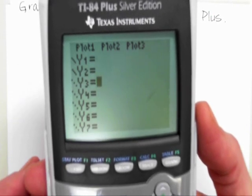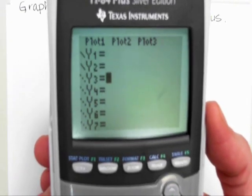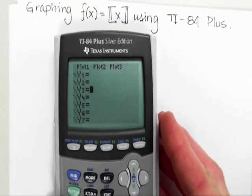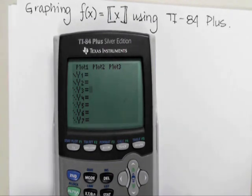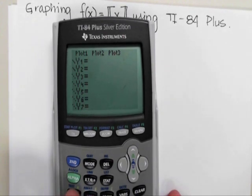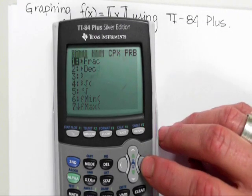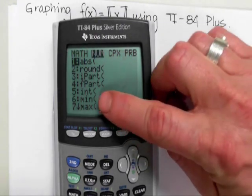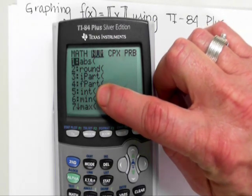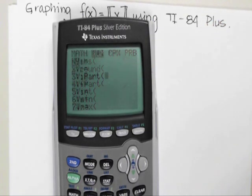Let's replace it here in the y3 equals function. So let me bring it back down. Again, we go to the math button, over to the numeric header. We want the greatest integer function, so we pick 5.